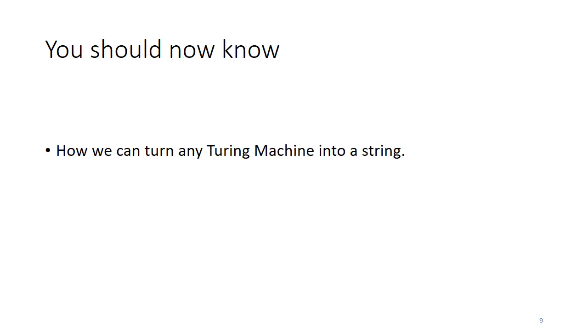So what you should now know is roughly a way in which we can turn a Turing machine into a string. And particularly what we're concerned about is turning a Turing machine into a string that comes from a specific alphabet. So in this case, our alphabet contains Q, A, Y, N, 0, 1, open and close brackets, left and right arrows, maybe a down arrow, and the comma symbol.